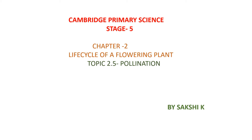Hello everyone, welcome to Cambridge Primary Science stage 5, chapter number 2 — life cycle of a flowering plant. Today our topic for discussion is pollination.